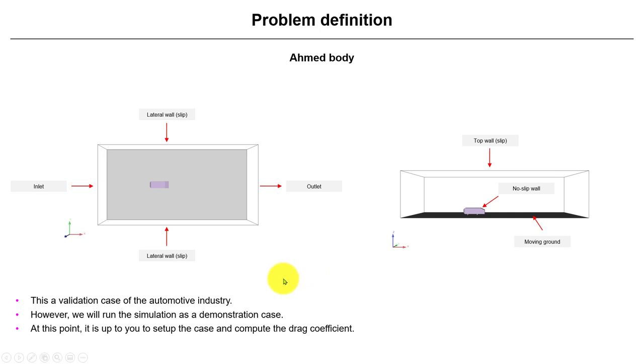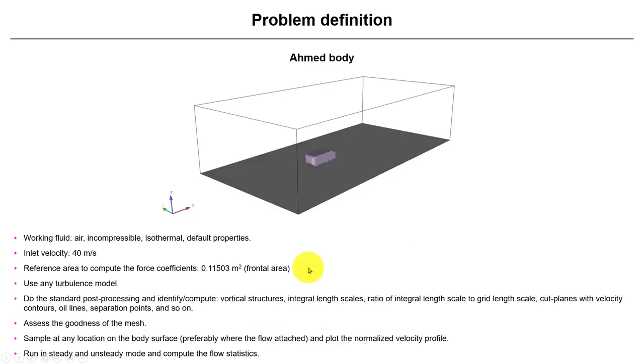This is a validation, a classical validation case for the automotive industry. There is a lot of data, but we're not going to push into the validation. We're going to give you a lot of margin of error to get the results. Our goal is just to see if you are able to set up a case from scratch. You are asked just to compute the drag coefficient.